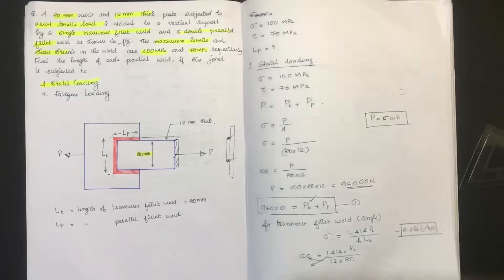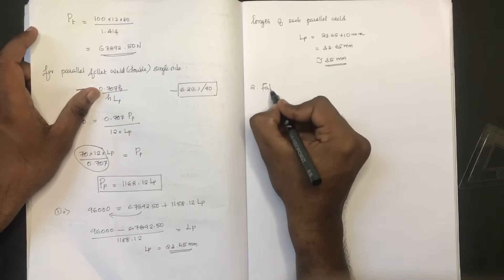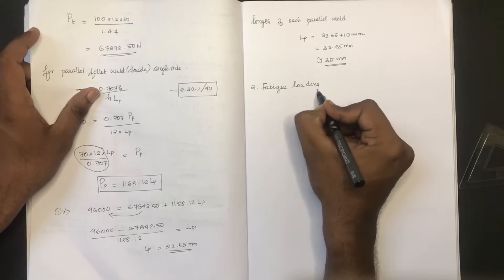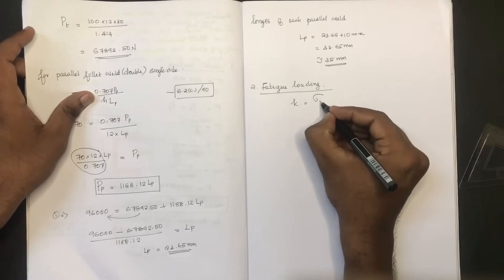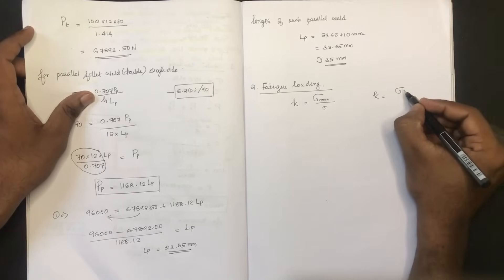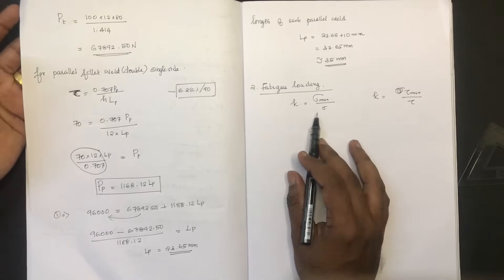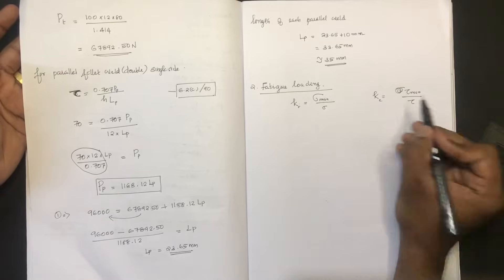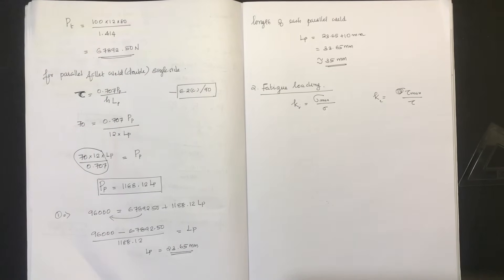Now for fatigue loading — fatigue loading uses a stress concentration factor. In dynamic loading, the stress concentration factor K is equal to sigma max divided by nominal stress sigma, and for shear: tau max divided by tau. We need to find the nominal sigma from K and then check the normal stress using the data.